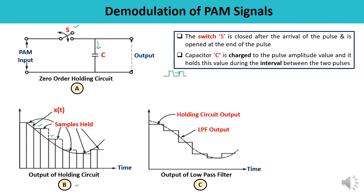At the output of the low pass filter, the distortions introduced by the holding circuit are eliminated. So in this manner, at the output we get our original modulating signal XT. You can understand this by plotting the different pulses — if you join the tops, you will observe how we get the required signal.